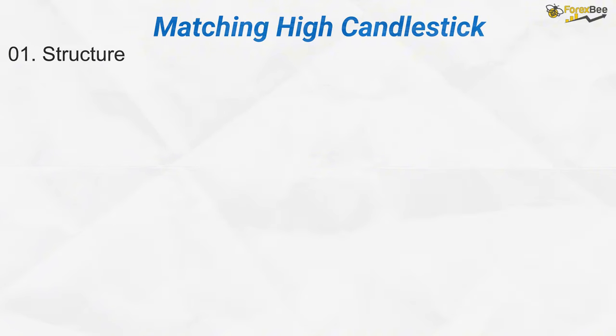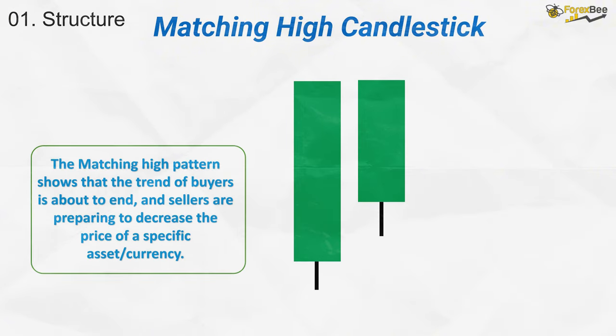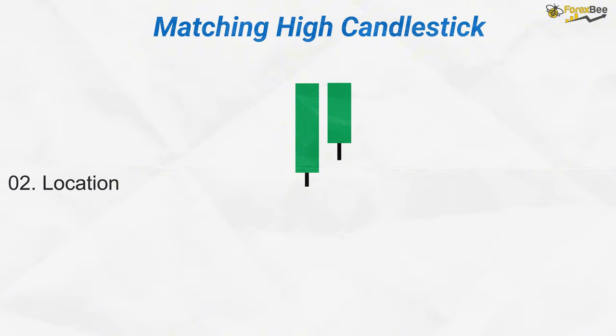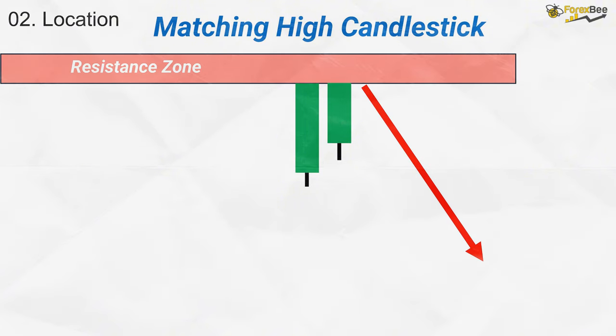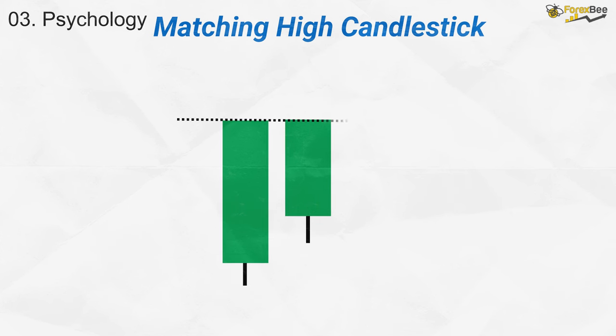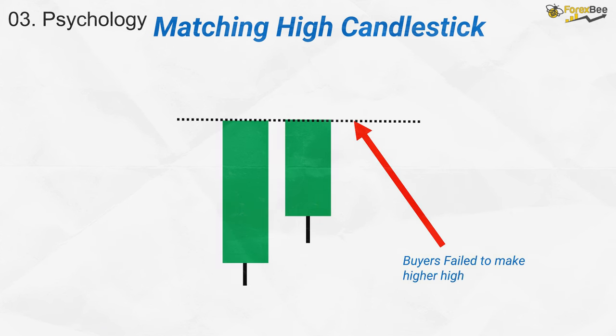Now, let's talk about the matching high candlestick pattern. Its structure consists of two consecutive bullish candles, both closing at the same or very similar high. The first candle shows strong buying pressure continuing the uptrend. However, the second candle, despite being bullish, fails to close above the high of the first candle, signaling that buyers are unable to push prices higher. This pattern usually forms near resistance levels where upward momentum begins to stall. The psychology behind the matching high is that although buyers try to continue the uptrend, they were unable to overcome the previous high, suggesting buying power is weakening and creating the potential for a reversal as sellers may start to step in.